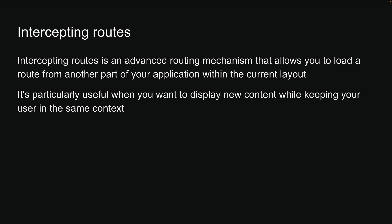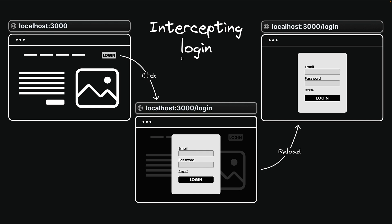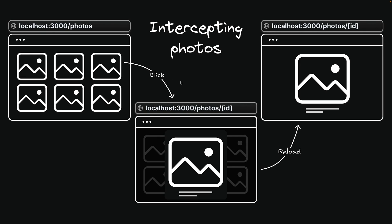Let me give you a couple of real-world examples. Consider a login flow. Typically clicking a login link would take you to a new page, but with intercepting routes you can display a modal instead while still updating the URL to slash login. This means sharing that URL or refreshing the page still works as expected, showing the full login page. Or consider a photo gallery — instead of jumping to a dedicated photo page, you can show a modal with the enlarged photo and details. The URL updates to match the specific photo, making it shareable. Accessing that URL directly will show the photo's full page.